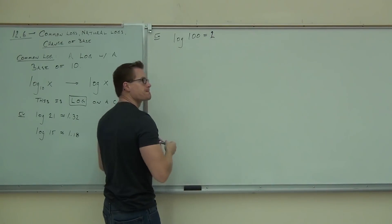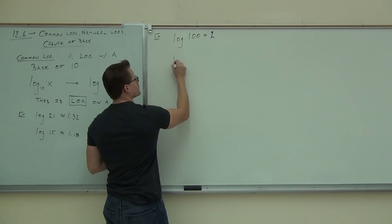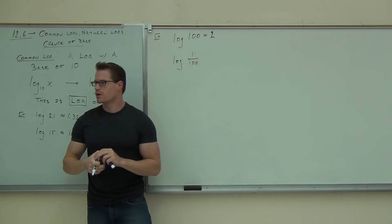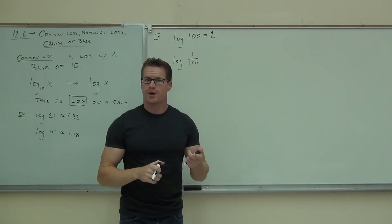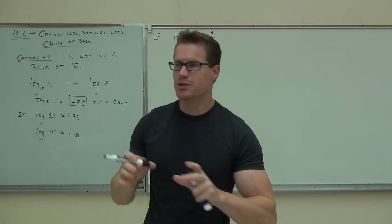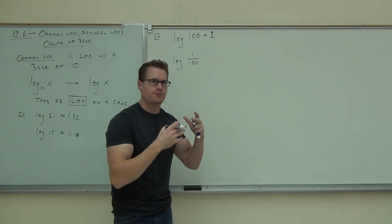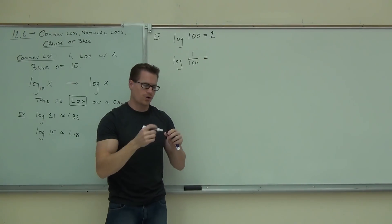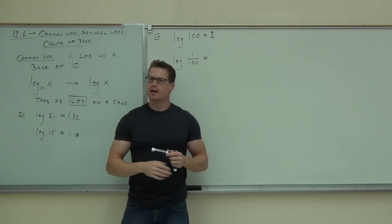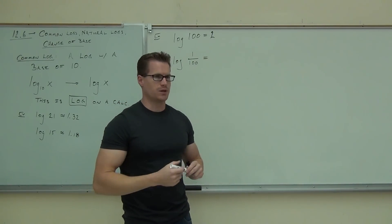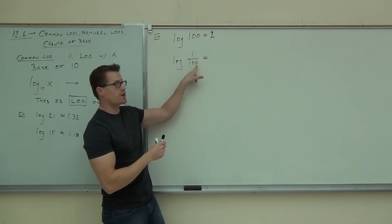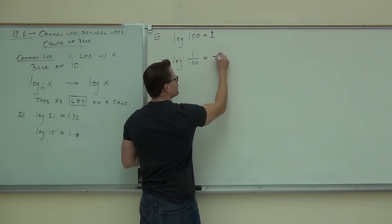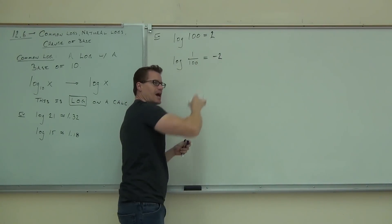How about log of 1 over 100? Your calculator will still do it, but I'd like you to understand the idea and do these without a calculator to reinforce what logs mean. This is asking: what power do you need to raise the base 10 to in order to get 1/100? The answer is negative 2, because 10 to the negative 2 gives you 1 over 100 — that's the negative exponent rule.